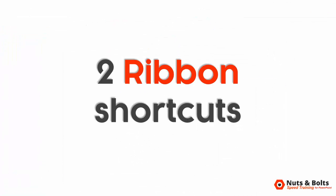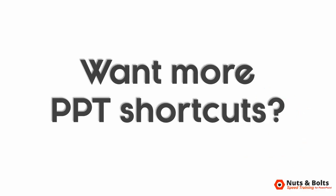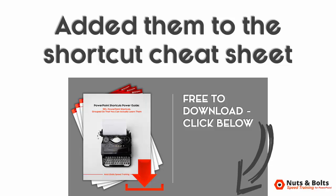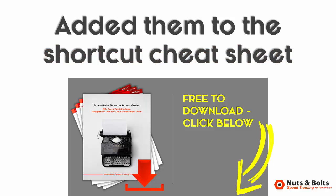Those are your two ribbon shortcuts to help you make it to happy hour. I've added them both to my updated PDF shortcut cheat sheet that you can grab for free directly beneath this video. Shortcuts are one of the fastest ways to double your productivity in PowerPoint, which is why I highly recommend grabbing my shortcut cheat sheet with all PowerPoint shortcuts grouped by activity. This is Taylor from Nuts and Bolts Speed Training — I'll see you at happy hour.